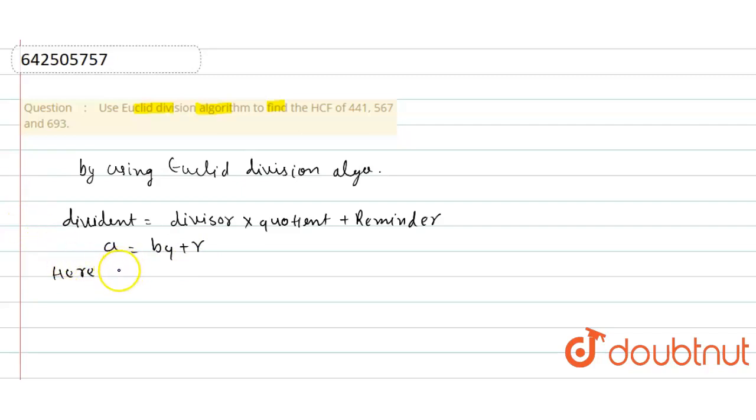Here a is 693 and b is 567. If we put the value in the equation, then we will get 693 equals 567 times 1 plus remainder 126.